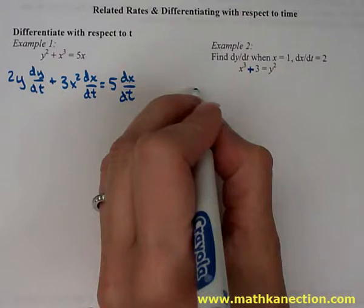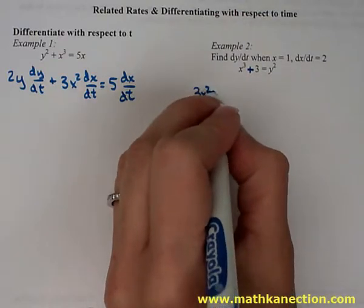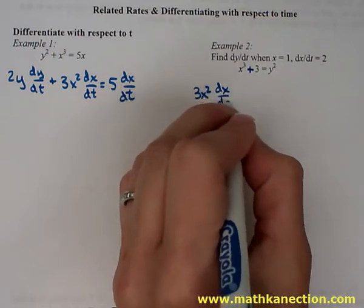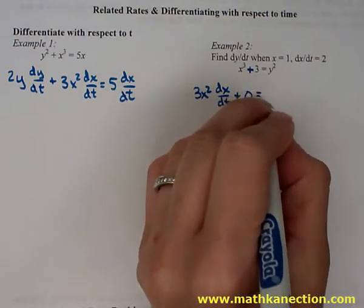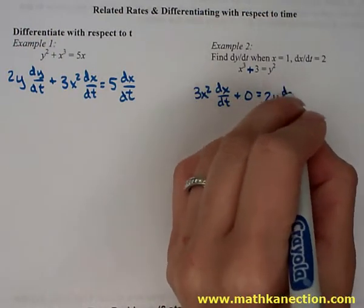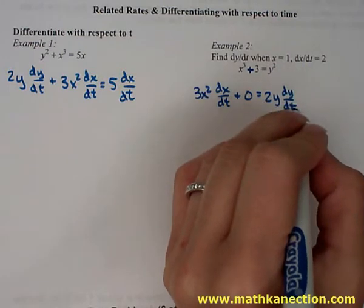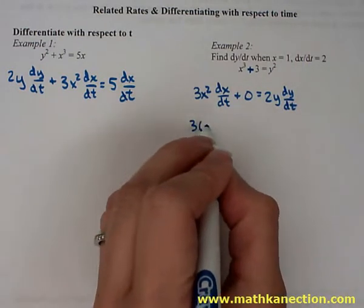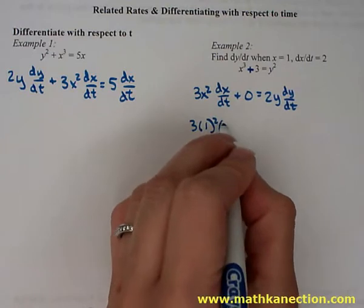The next problem, we're going to find dy/dt when x is equal to 1 and dx/dt is equal to 2. Deriving x cubed is 3x squared dx/dt, derivative of 3 is 0, and derivative of y squared is 2y dy/dt. Replacing in the given values of 1 for x, dx/dt is 2.